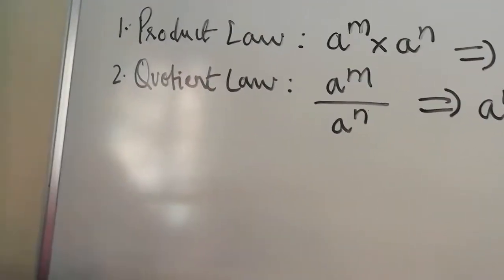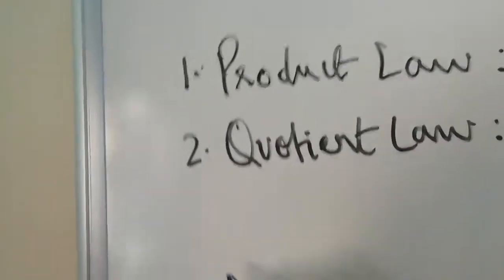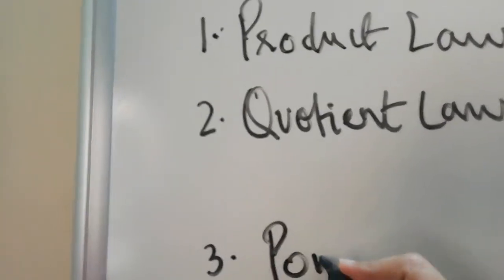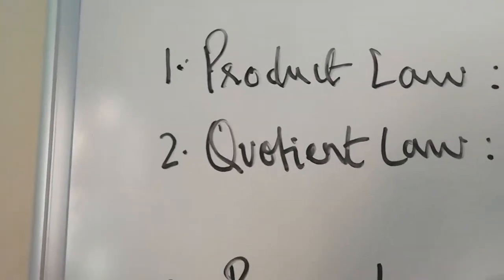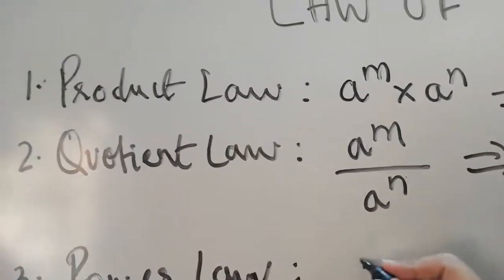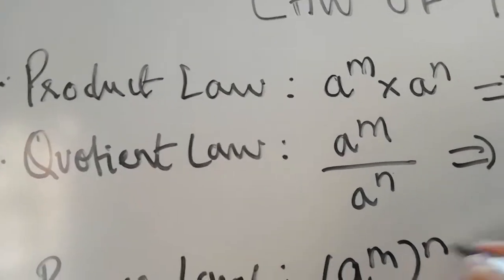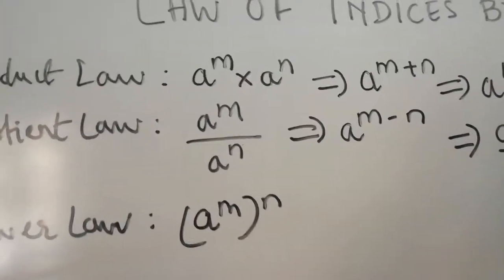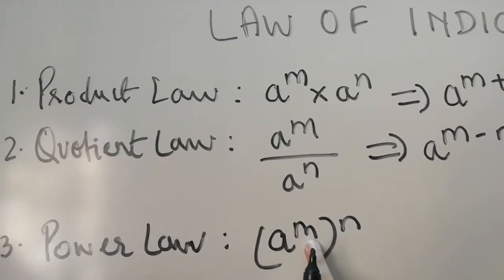The third law is the Power Law. This is written as a raised to m, with the whole bracket raised to n. In case of power law, when there is no sign between the indices, it is multiplication.